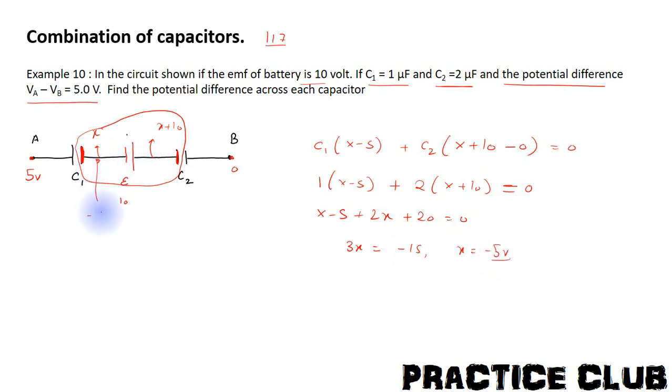Thus, this point of potential minus 5V is minus 5V is equal to minus 5V. So, we will have to find the potential difference across each capacitor.